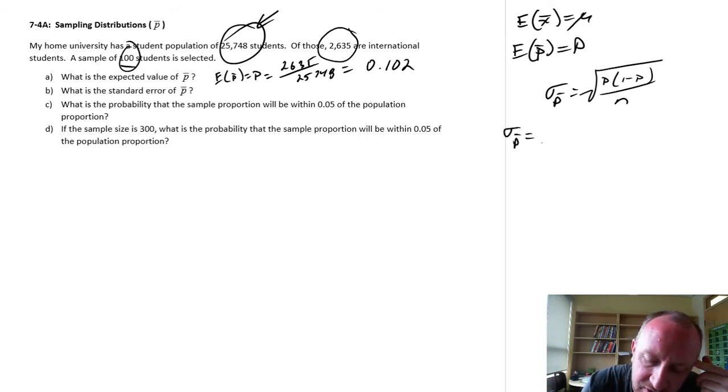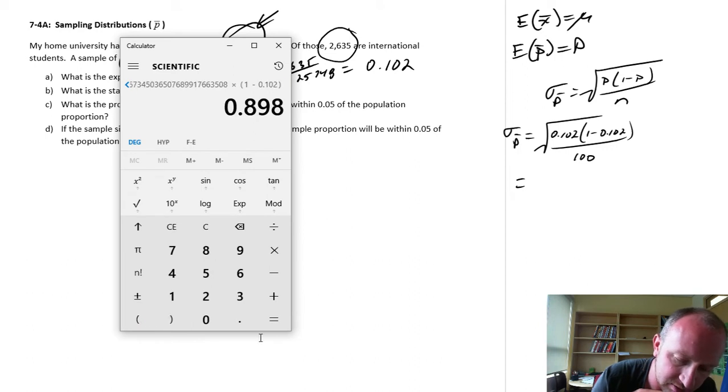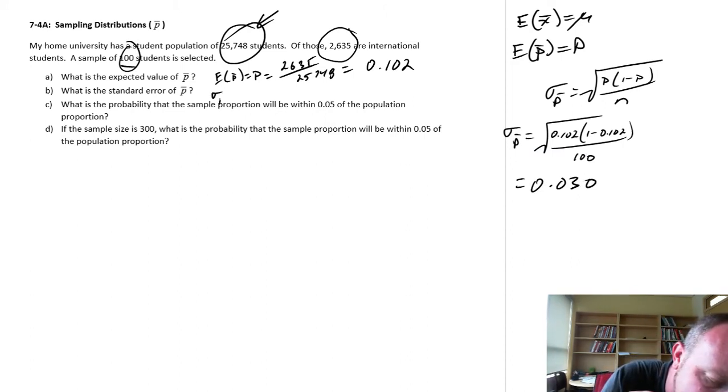So if we just put in our values, this is 0.102 times 1 minus 0.102 divided by my sample size of 100. So if I get my calculator here, 0.102 times open brackets 1 minus 0.102 equals, divide that by 100, and take the square root of that, and I get 0.030. So there's my standard error here, sigma p bar is 0.030.